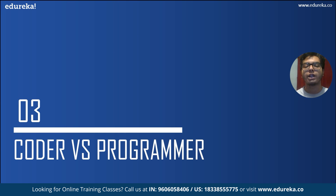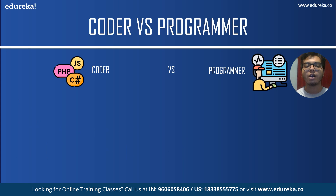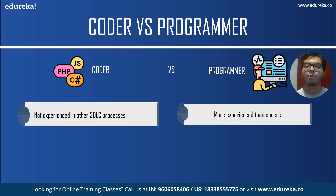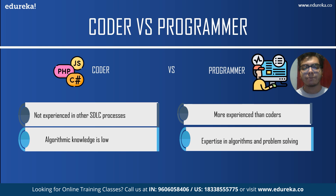A coder will not have experience in the SDLC — the Software Development Life Cycle — processes, while a programmer will have more experience in the SDLC because programmers have to deal with planning and implementation. They also take the code received from coders and amalgamate it into the app they're building, which is a very significant process requiring deeper experience in the entire software life cycle.